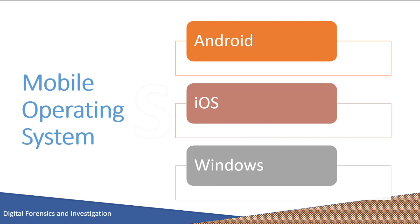iOS native applications are distributed through the App Store, which is closely monitored by Apple. Windows Phone is a proprietary mobile operating system developed by Microsoft for smartphones and pocket PCs. The Windows Phone operating system is similar to Windows desktop operating systems but optimized for devices with a small amount of storage.